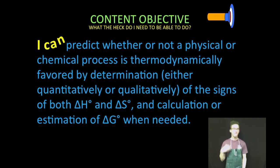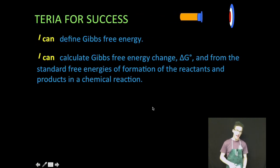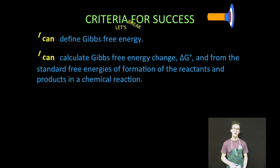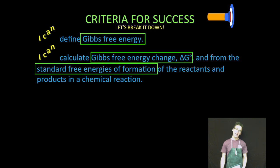So our big goal again is to figure out whether a reaction is thermodynamically favorable simply by looking at the values of delta H, delta S, and delta G. Breaking it down, number one we're going to define Gibbs free energy and number two we're going to calculate Gibbs free energy change from the standard free energies of formation of the reactants and products in a chemical reaction.